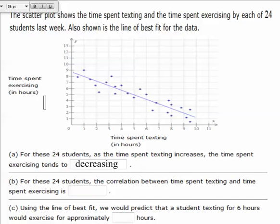And it says for those 24 students, the correlation between time spent texting and time spent exercising would be negative. Because remember, this line right here has a negative slope. It is decreasing.